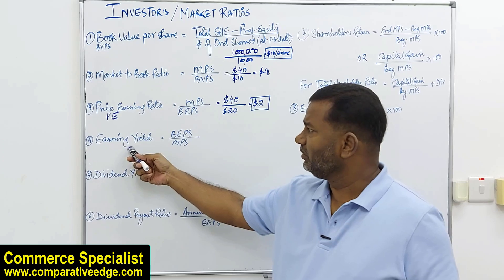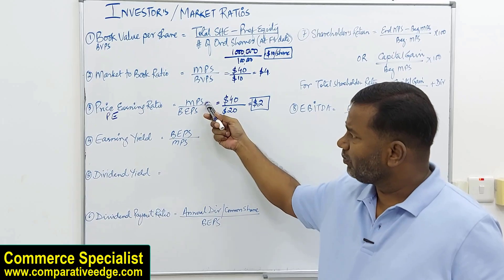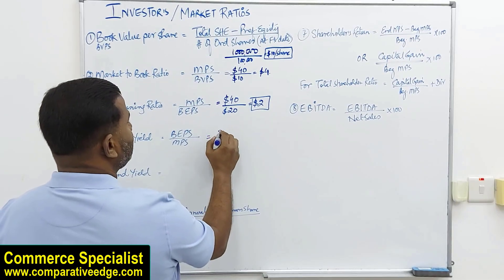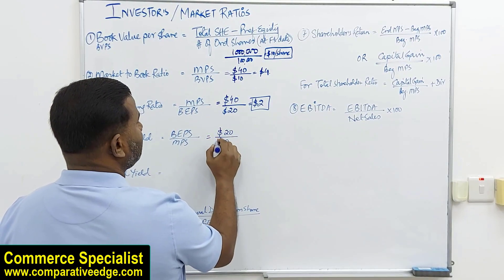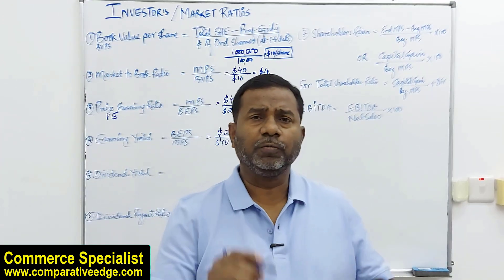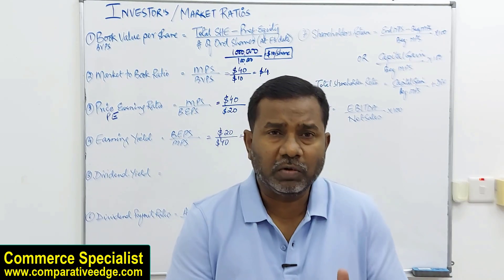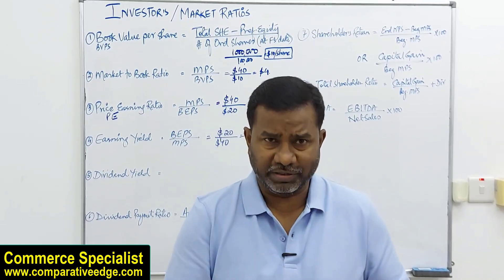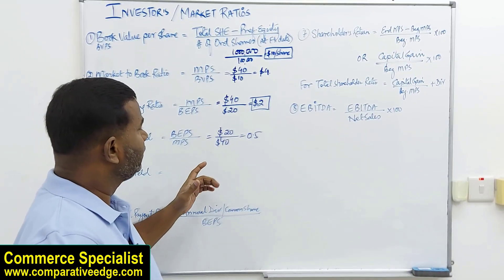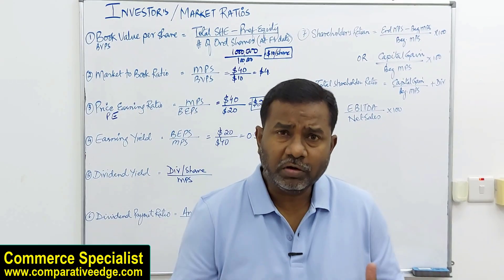The next ratio is earnings yield, which is simply the opposite of the PE ratio. Instead of EPS in the denominator, you put it in the numerator, and market price per share goes in the denominator. Plugging in numbers: $20 divided by $40 gives an earnings yield of 0.5. This measures the income-producing power of one ordinary share at the current market price.